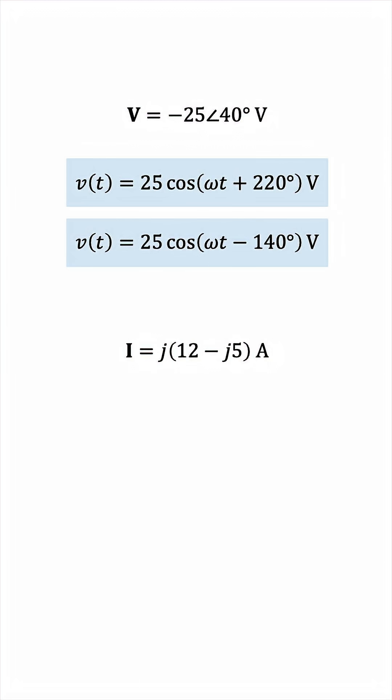Moving on to the second phasor, we see that it's expressed in rectangular form, Cartesian form. So, we need to convert it to polar form, or exponential form.